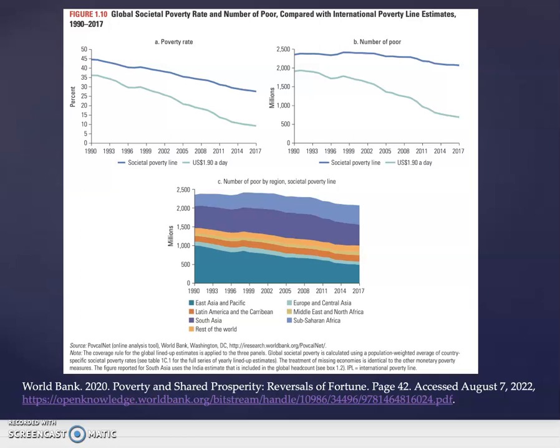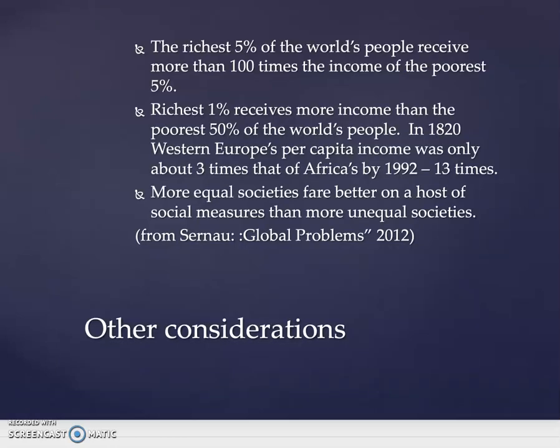Here you can see the societal poverty line divided by region — number of poor per region. We're talking about thousands of millions, so essentially billions. You could read this chart and say approximately 2,000 million, or 2 billion people, in terms of number of poor.